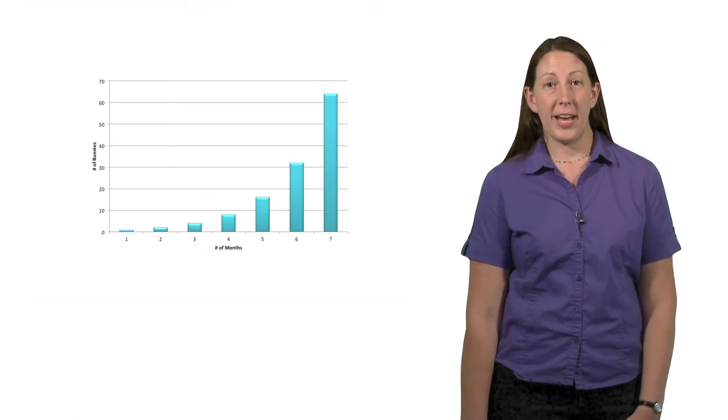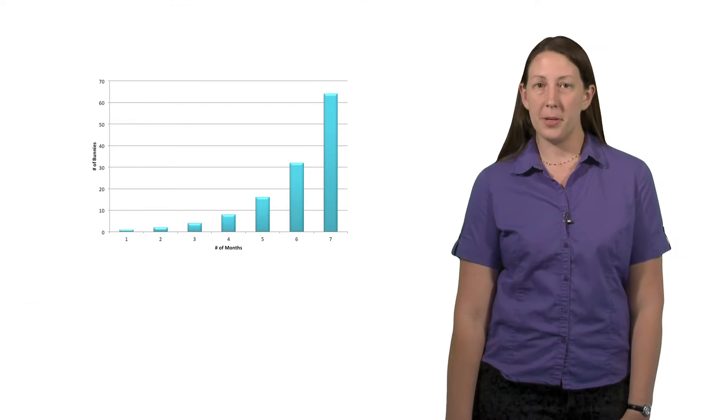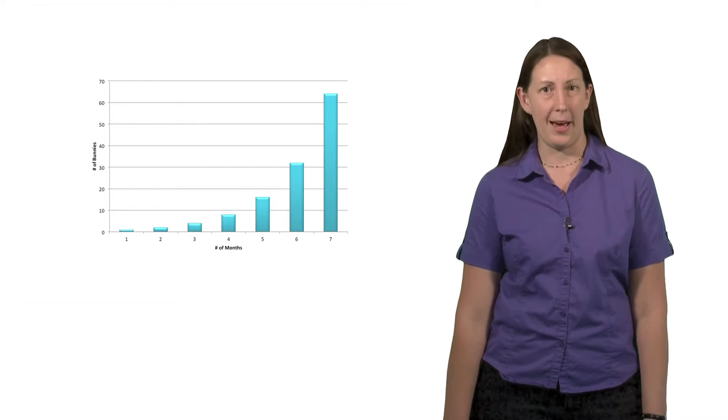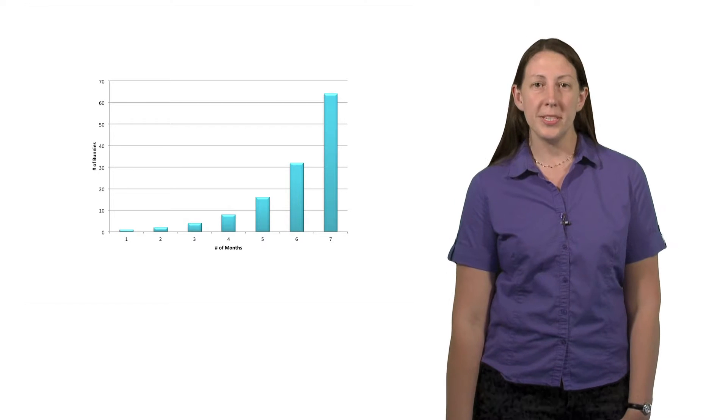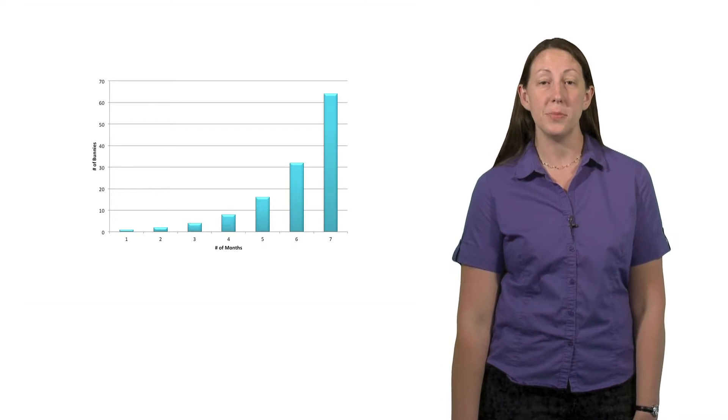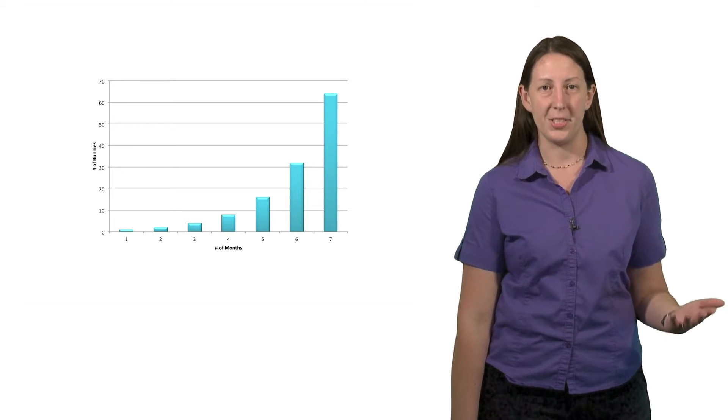So suppose we track the bunny population over time. What if we wanted to know how many bunnies there were after a month? After two months? After five months? After a year? After five years? After a century? To do these sorts of calculations, we would need to have some sort of function which captured the doubling behavior of the bunny population.